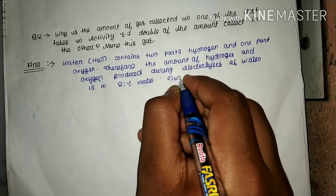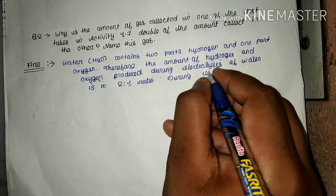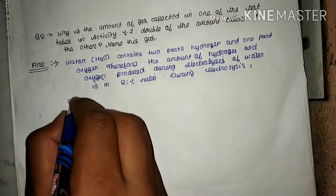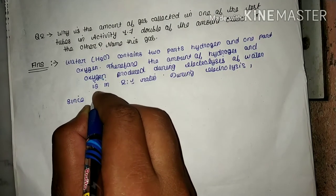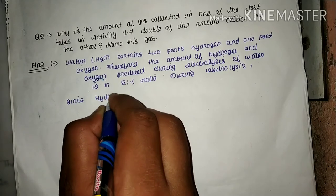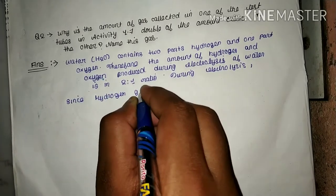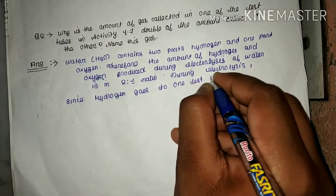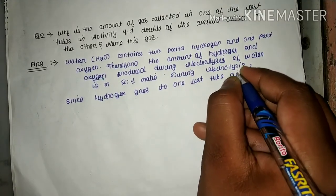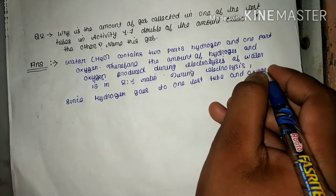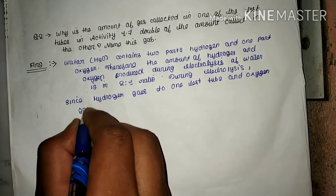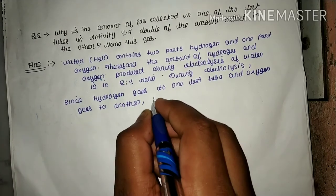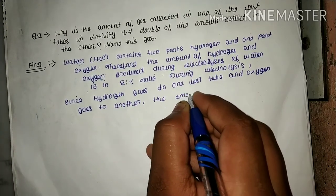During electrolysis, since hydrogen goes to one test tube and oxygen goes to another, the amount of gas collected in one of the test tubes is double the amount collected in the other.